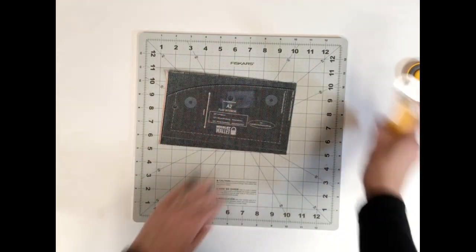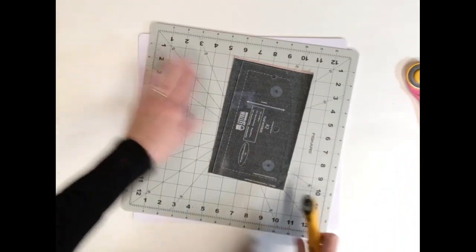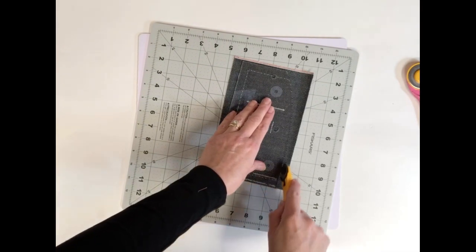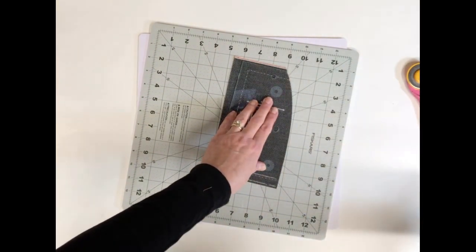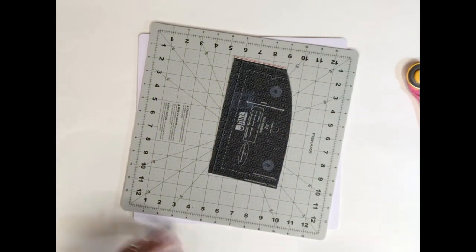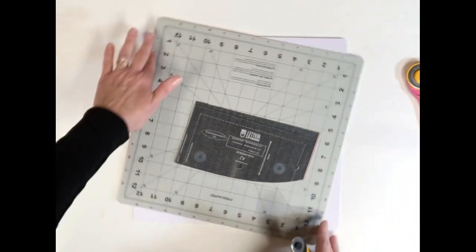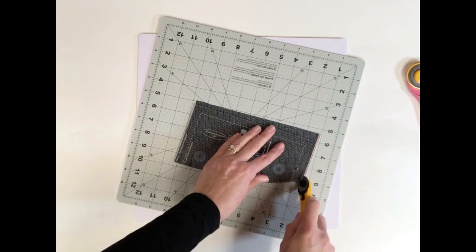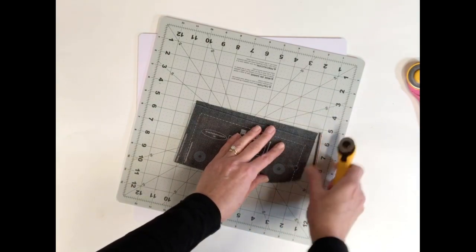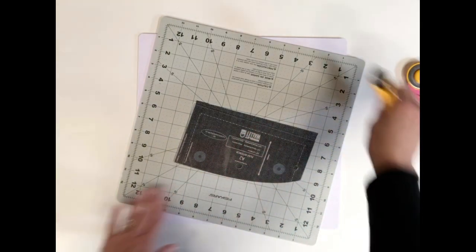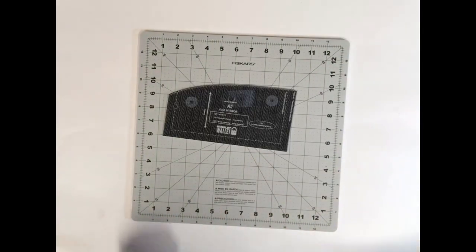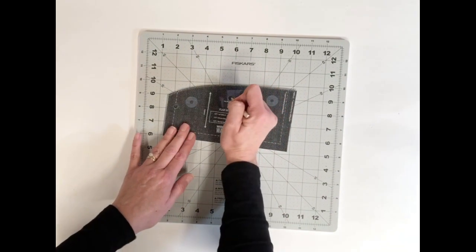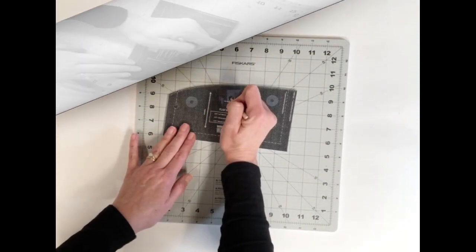If you're not using fabric with a directional print and you're not fussy cutting, using the templates to cut out multiple pieces is really fast and easy. While I only have one layer of fabric here that I'm working with, I could stack several layers together and cut them all at once simultaneously. Using the cutout in the template, I can easily mark the insertion point for my magnetic snap.